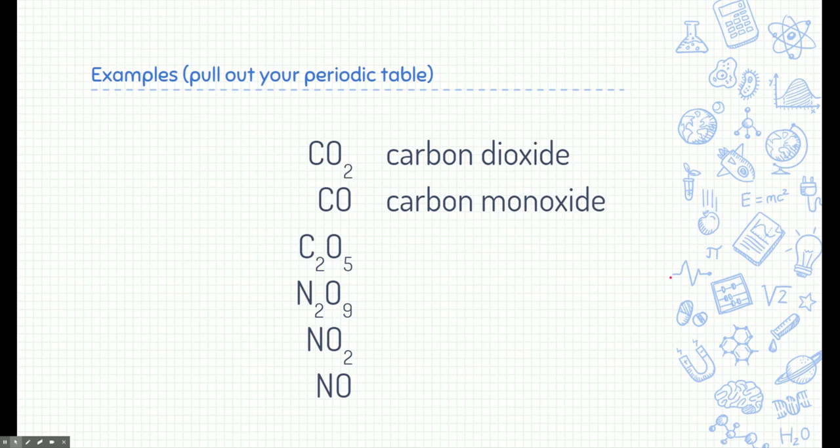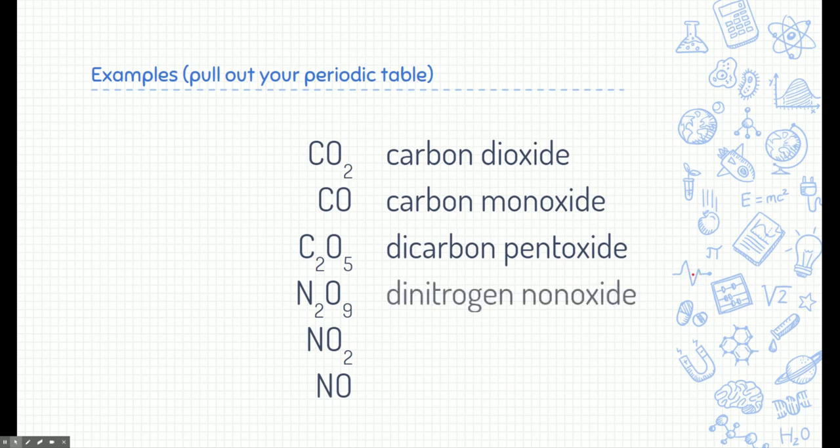Sometimes we don't use it for the second one too. All right. The third one is C2O5. That's two carbons and five oxygens. So it's dicarbon pentoxide. Next is dinitrogen nonoxide. So two nitrogens and nine oxygens. Next is nitrogen dioxide. So one nitrogen, two oxygens. The last one, nitrogen oxide. If you said nitrogen monoxide, you would be right as well. Like I said, mono sometimes is used for the second element to mean one. Sometimes we don't even use mono at all. We just say oxide or whatever it is.